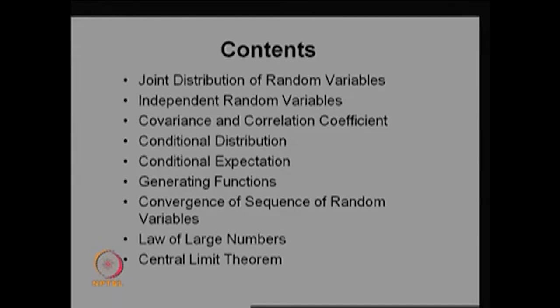We are also going to list out a few generating functions: probability generating function, moment generating function, and the characteristic function. Then at the end of the probability theory part we are going to discuss how a sequence of random variables converges, and for that we will discuss the law of large numbers, completing Lecture 2 with the central limit theorem.